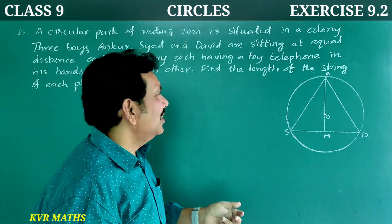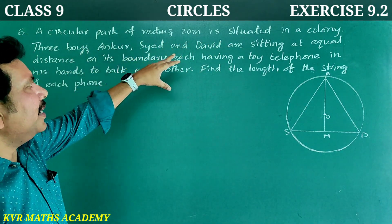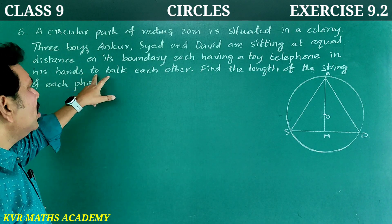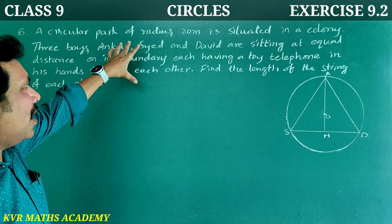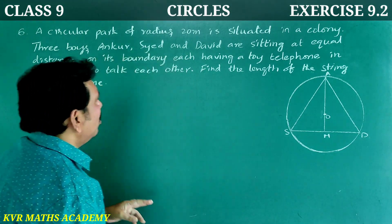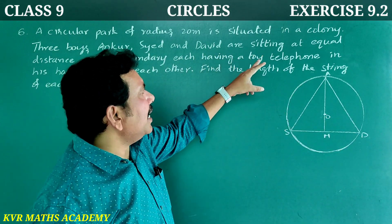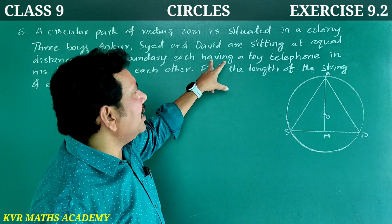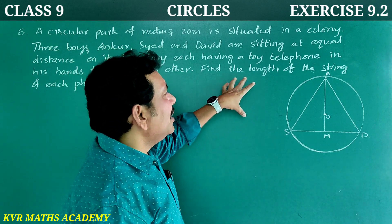Let's go through this. Sixth question: A circular park of radius 20 meters is situated in a colony. Three boys — Ankur, Sayadhan, and David — are sitting at equal distance on its boundary, each having a toy telephone in his hands to talk to each other. Find the length of the string of each phone.